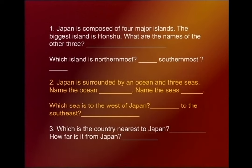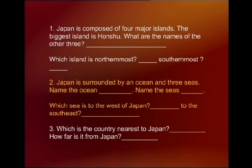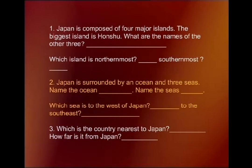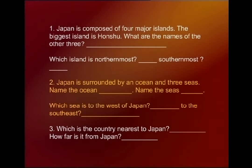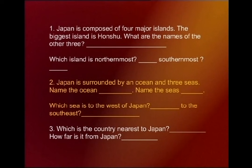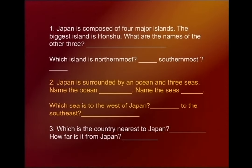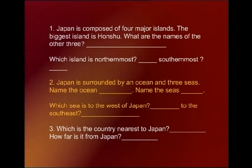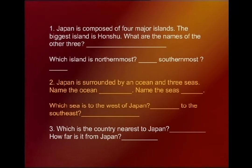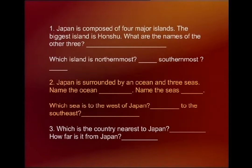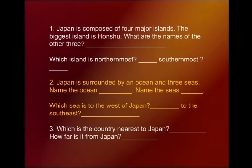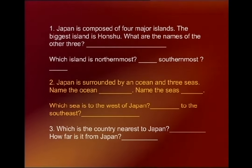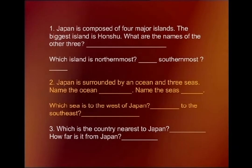Number three: Which sea is to the west of Japan? It is the Sea of Japan. And to the southeast, the Philippine Sea. Which is the country nearest to Japan? It is South Korea. How far is it from Japan? Approximately 150 kilometers.